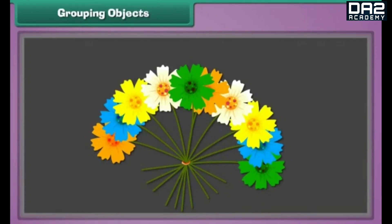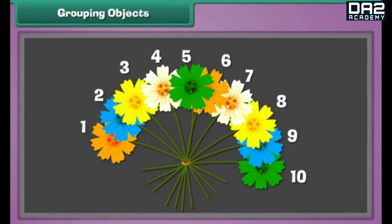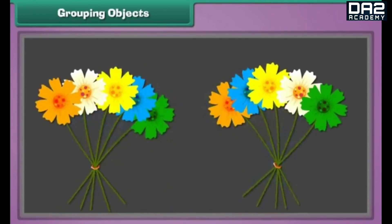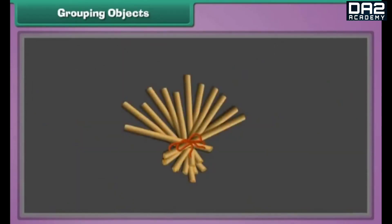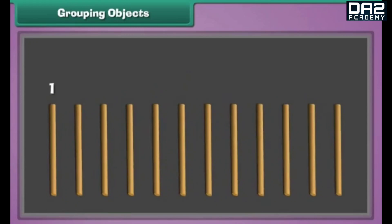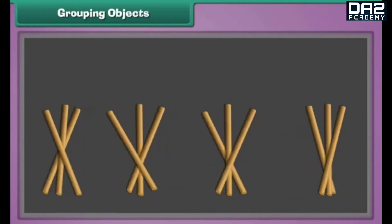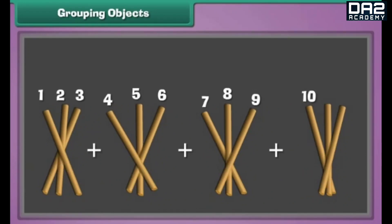Grouping objects. Look at this bunch of flowers. There are ten flowers in the bunch. We can make two groups, each consisting of five flowers. Look at this bundle of sticks. There are twelve sticks in the bundle. To make four groups, each bundle will have three sticks. We can similarly group other objects.